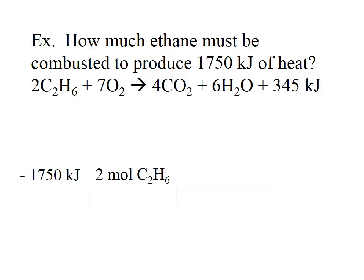We start with what is given: 1750 kilojoules. This is negative because since it is produced, it is the Delta H value, which is negative. Starting with kilojoules, we look at how many moles of ethane are needed to produce that amount. The relationship is: 2 moles of ethane produces 345 kilojoules, so that's negative 345 kilojoules. Negative 1750 divided by negative 345 gives us a positive value for moles of ethane.